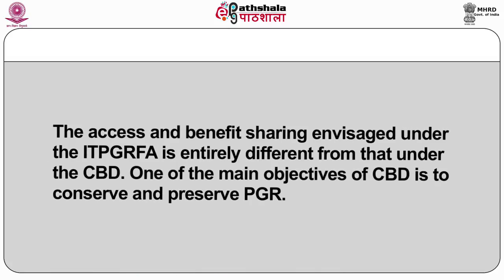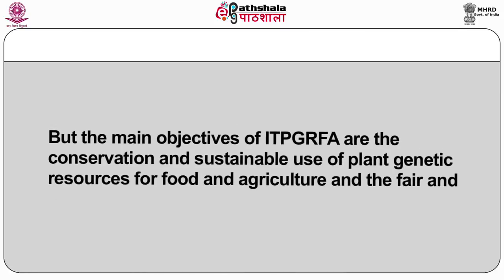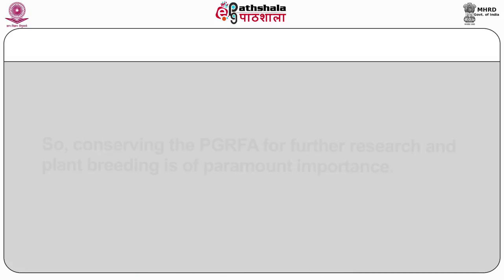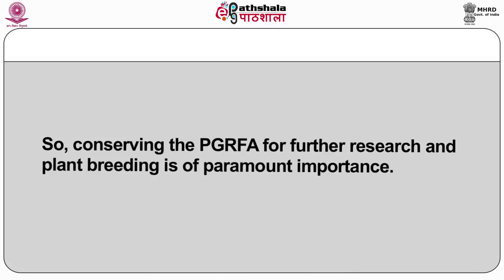The access and benefit sharing envisaged under the International Treaty for Plant Genetic Resources in Food and Agriculture is entirely different from what it is under CBD. One of the main objectives of CBD is to conserve and preserve plant genetic resources. But the main objectives of the International Treaty for Plant Genetic Resources are the conservation and sustainable use of plant genetic resources for food and agriculture and the fair and equitable sharing of the benefits arising out of their use, in harmony with the Convention on Biodiversity for sustainable agriculture and food security. So conserving the plant genetic resources in food and agriculture for further research and plant breeding is of paramount importance.